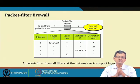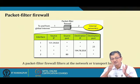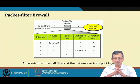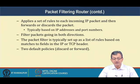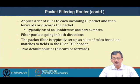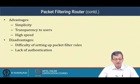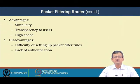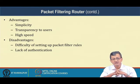A packet filter router applies a set of rules to incoming IP traffic, forwarding or discarding it, filtering in both directions. Rules are based on IP or TCP header fields — IP address, port number, etc. Advantages include simplicity and transparency to users, and higher speed. Disadvantages include difficulty in setting up rules — a large organization with many IP/subnet blocks finds this cumbersome — and lack of source authentication.